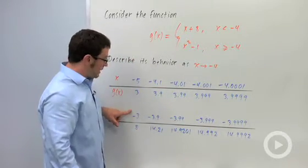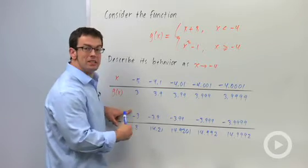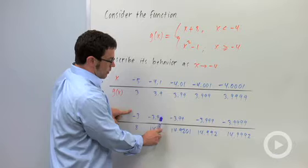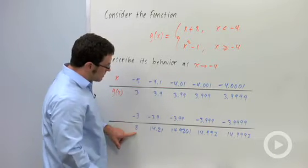Now, if we start from the right—negative 3 is to the right of negative 4, and I go to the left—I get negative 3, negative 3.9, negative 3.99. These are the values I get.